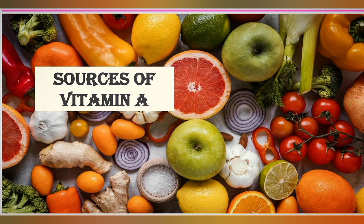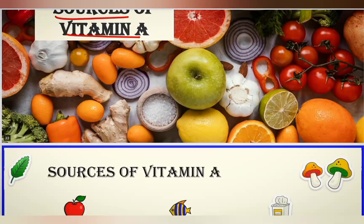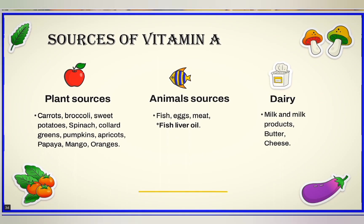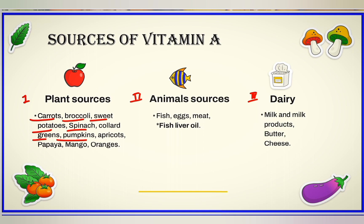Sources of vitamin A are broadly divided into three categories: plant sources, animal sources, and dairy sources. In plant sources, vegetables include carrots, broccoli, sweet potatoes, spinach, collard greens, and pumpkins. Some fruits such as apricots, papaya, mango, and oranges are also rich sources of vitamin A.